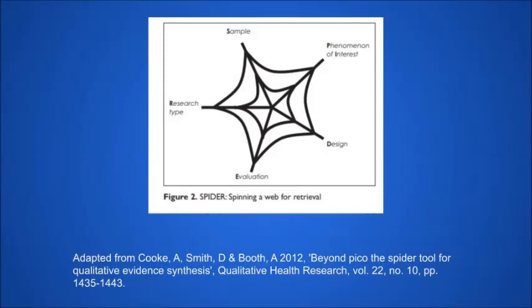To conclude, SPIDER is like spinning a web for retrieval — here they have given a beautiful diagram showing Sample, Phenomena of Interest, Design, Evaluation, and Research Type, and how you are going to be guided in order to come up with a proper systematic review. I'm going to stop here and come up with another video on SPIDER itself where we will check out much more details about them. Till then, thanks and take care, bye.